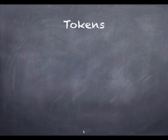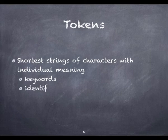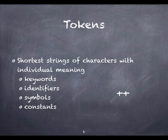Tokens are the basic building blocks of programs — the shortest strings of characters with individual meaning. There are many kinds of tokens, including keywords, identifiers, symbols, and constants. Some kinds of tokens, like the increment operator, correspond to only one string of characters. Others, like variable names, correspond to a set of strings that share some common form.